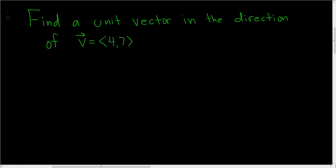We're being asked to find a unit vector in the direction of the given vector v = <4,7>. Let's go ahead and work it out.